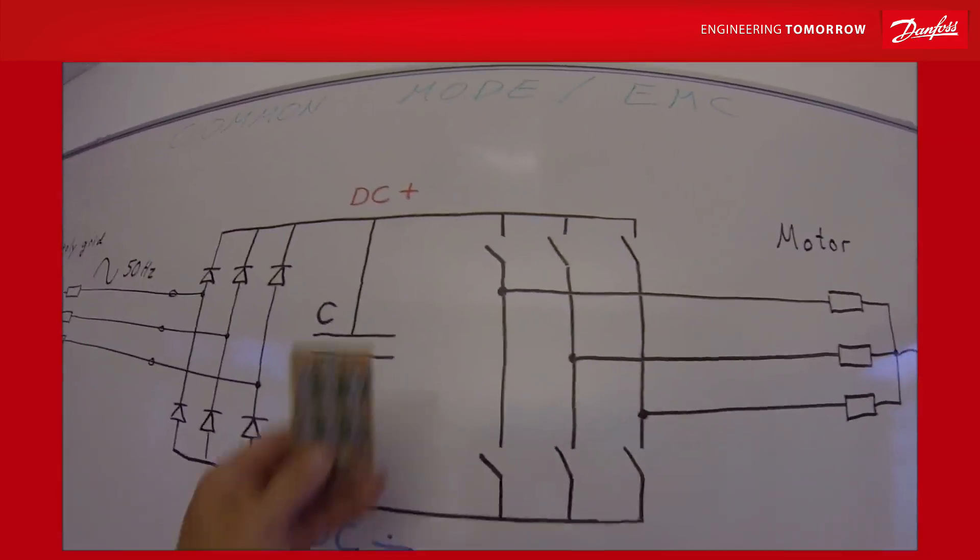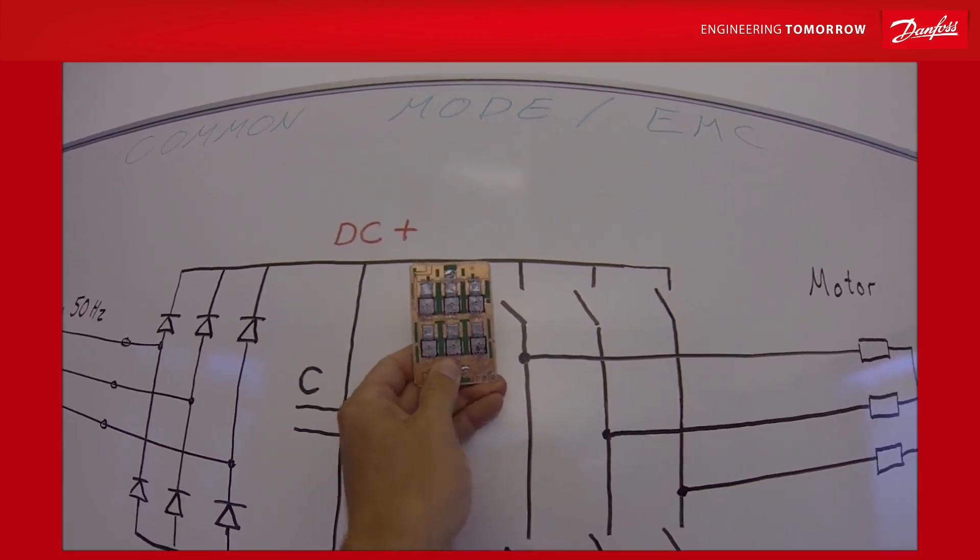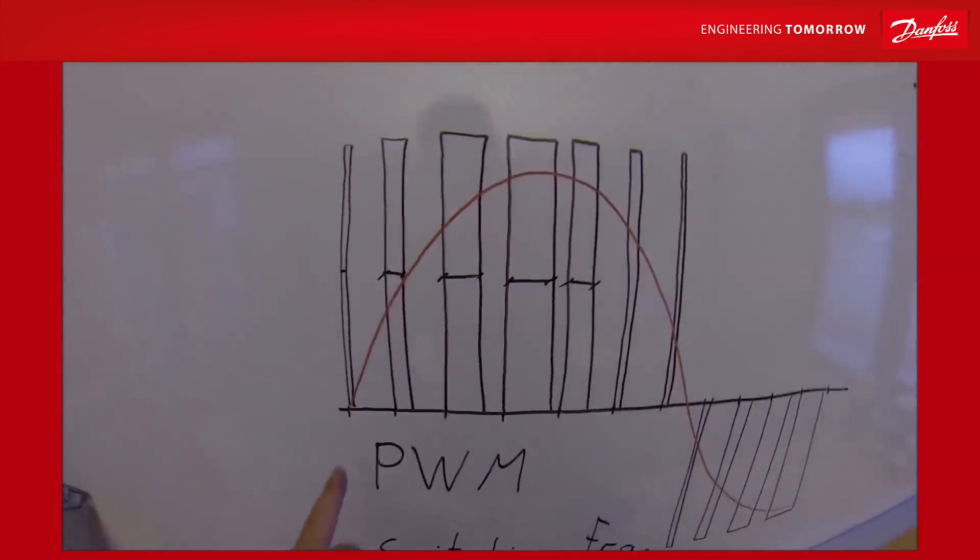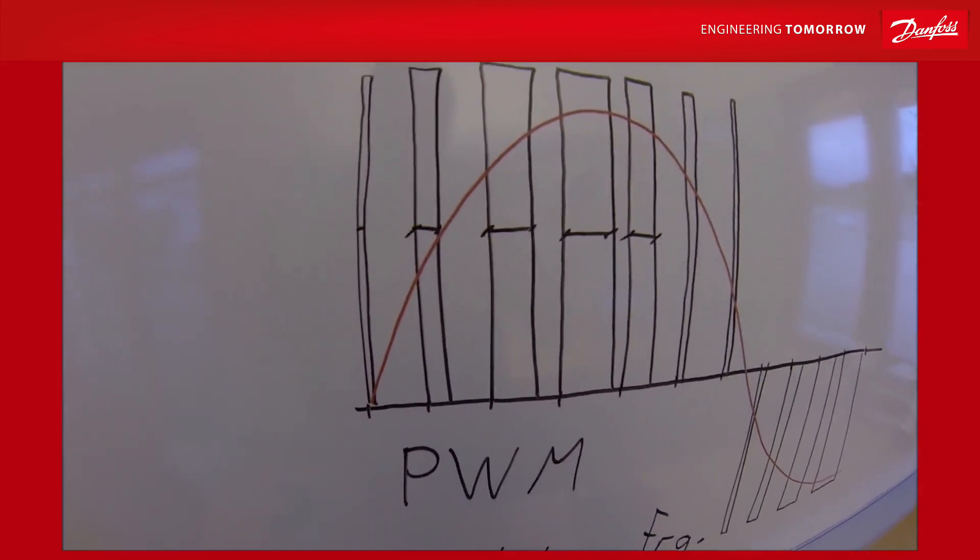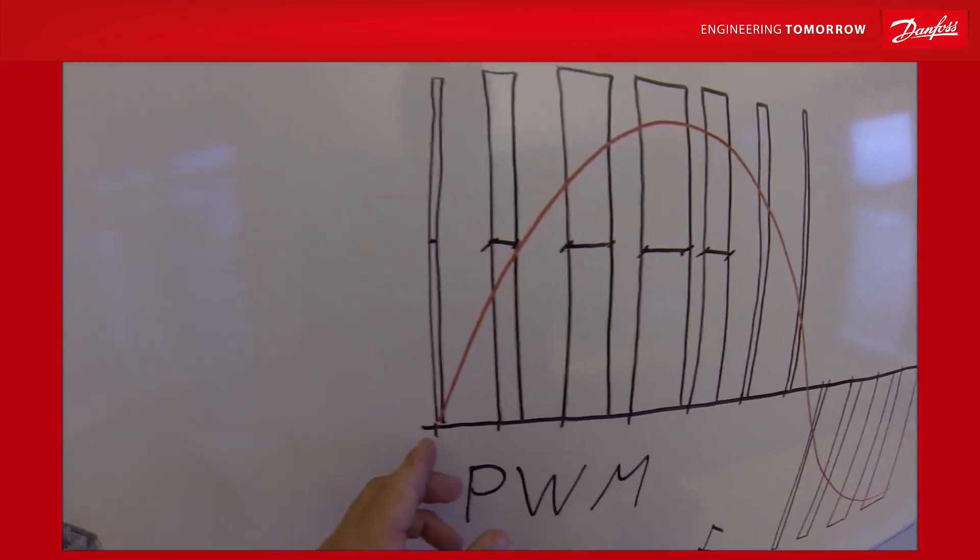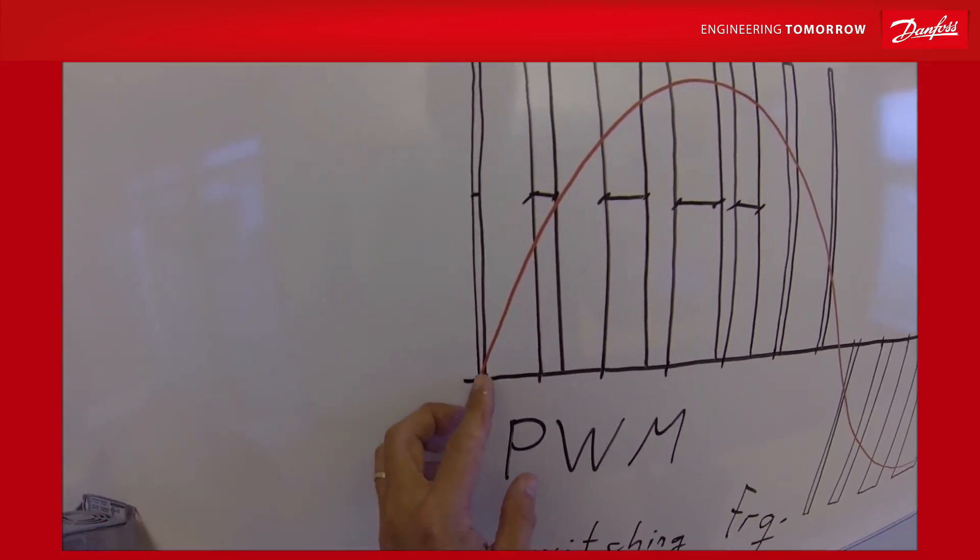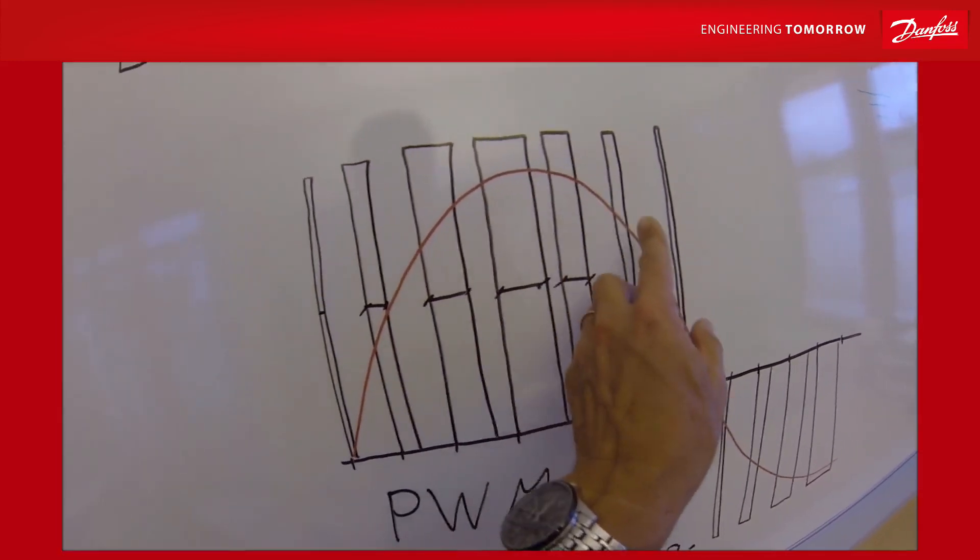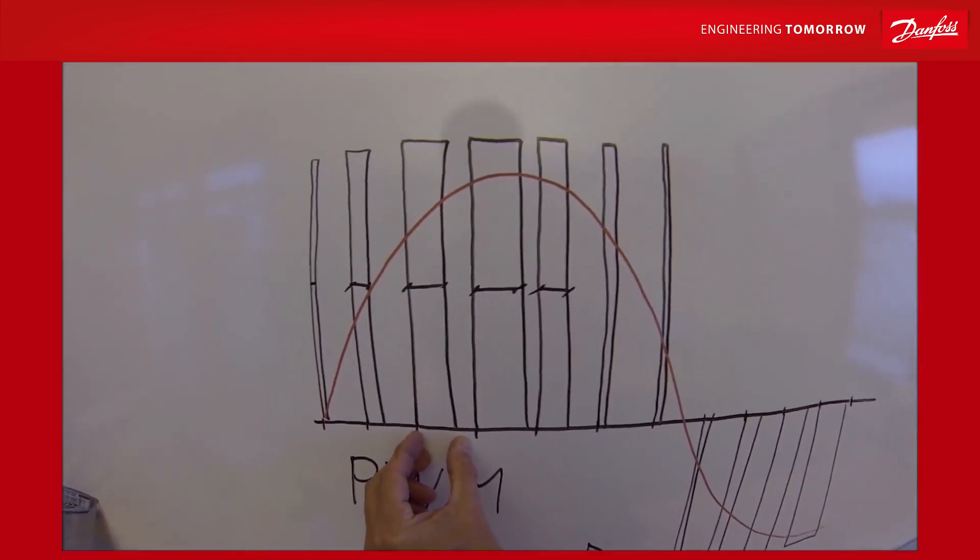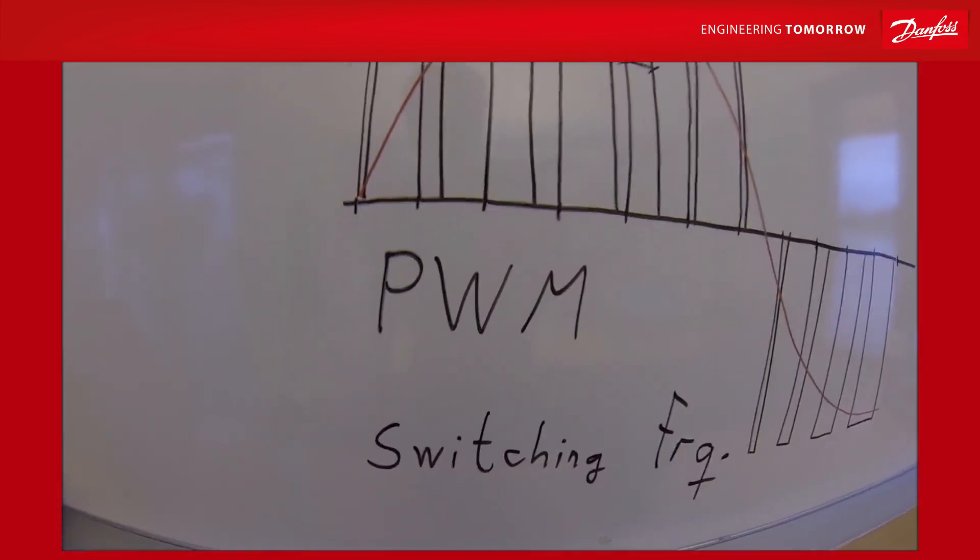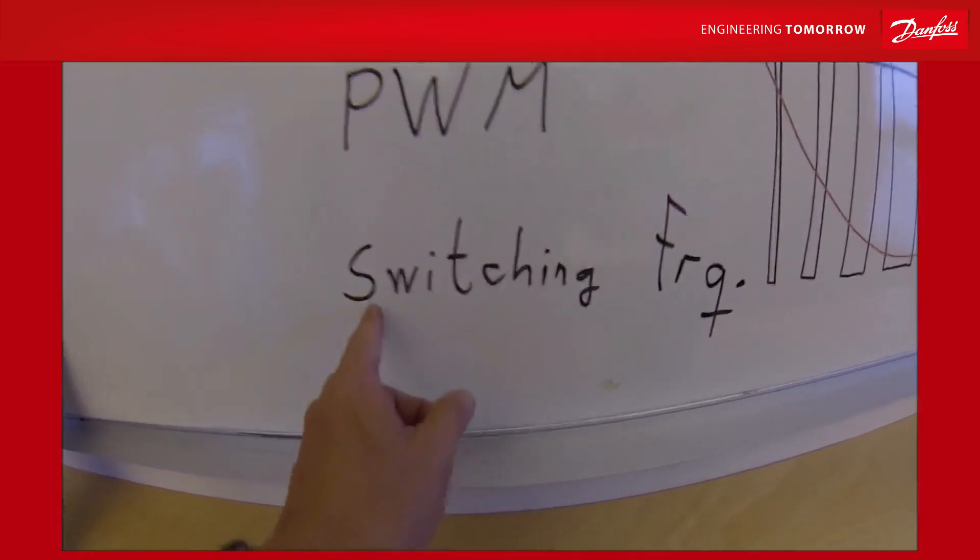Of course, these transistors can only be turned on and off. So to produce our beautiful sine wave, we have to do it in a primitive way. We turn on these IGBTs for very short time when we want the sine to be small, and the bigger part of the sine, the fat parts, we increase the width of the pulses. This is called pulse width modulation, and the rate at which we do this is the switching frequency.